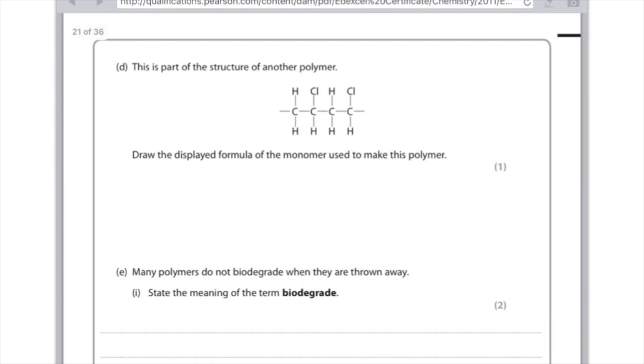This is part of the structure of another polymer. Draw the displayed formula of the monomer used to make this polymer. So let's work out where it started repeating itself and how many there are. This is one here. And there's another one there. And then just make sure, remember, the monomer is an alkene, so it needs a double bond. So just reinsert the double bond and make sure that each carbon has four bonds. And that is your answer.